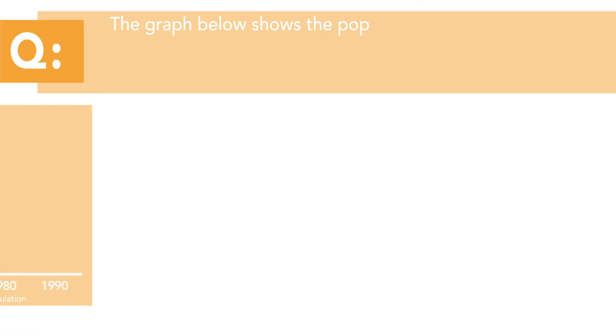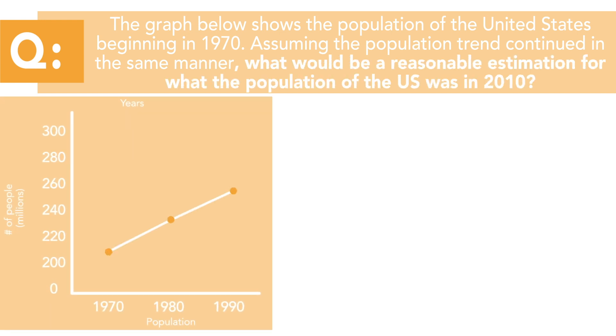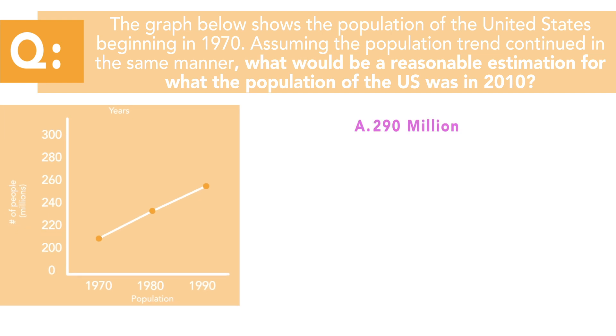Now the graph on the screen shows the approximate population of the United States beginning in 1970. Assuming the population trend continued in the same manner, what would be a reasonable estimation for what the population of the United States was in 2010? So the answer options would be 290 million, 270 million, 260 million, 250 million. Now take a minute, see if you can figure out the correct answer.